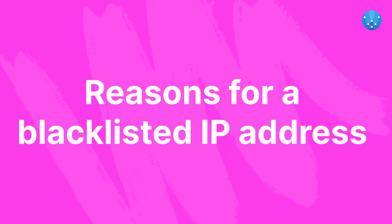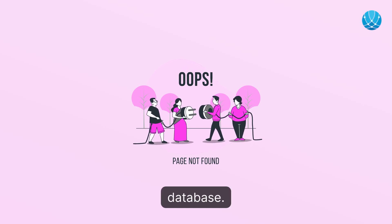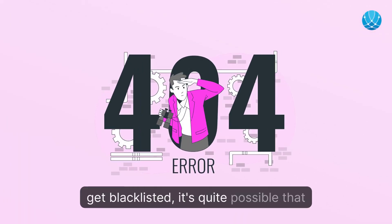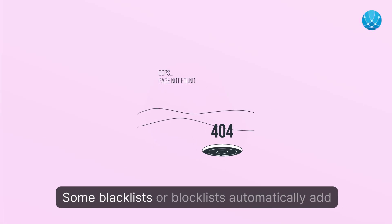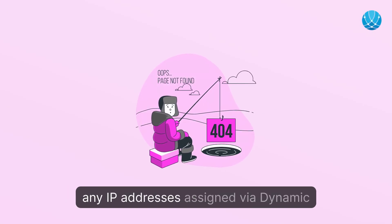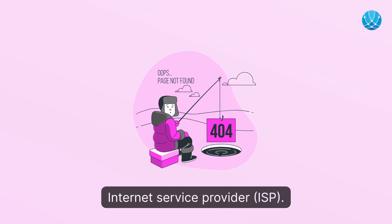Reasons for a blacklisted IP address. There are several reasons why your IP may have ended up on a blocklist or in a blacklist database. If you don't know how to get blacklisted, it's quite possible that you did nothing wrong. Some blacklists or blocklists automatically add any IP addresses assigned via Dynamic Host Configuration Protocol, DHCP, from their internet service provider, ISP.